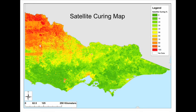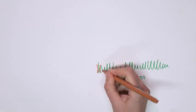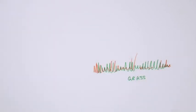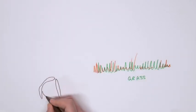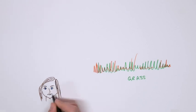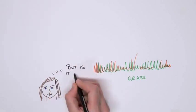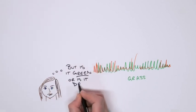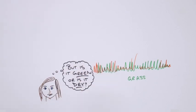Using the satellite data, we can then make a state-wide map of curing. Let's take a look at how the satellite map is made. The basic question we are trying to answer is: is the grass green or is it dry?